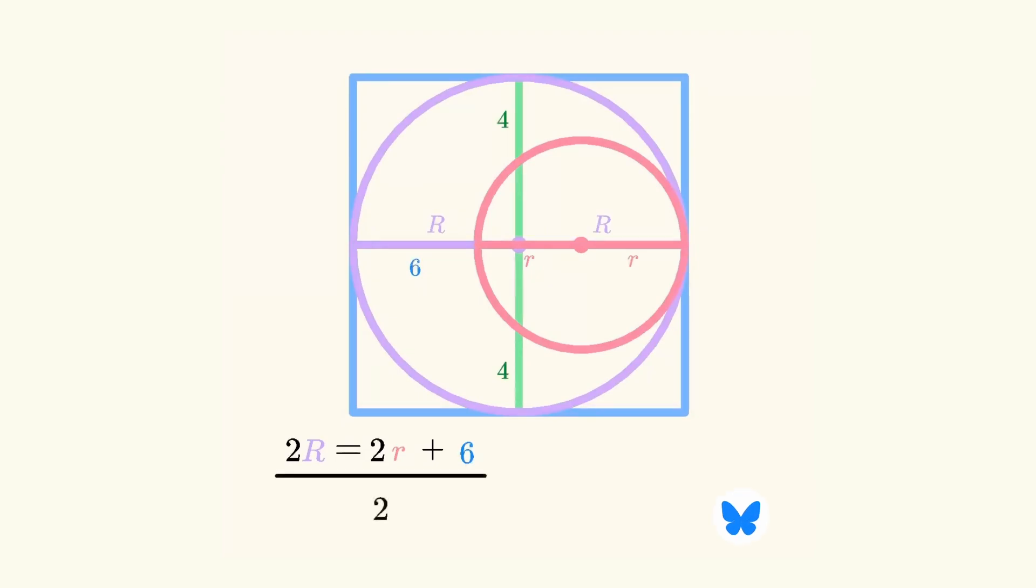We can simplify this equation by dividing it by 2, which leaves us with large R equals small r plus 3. It's easy to add that to our diagram, because if small r plus 3 equals the large radius, then this distance must equal 3.